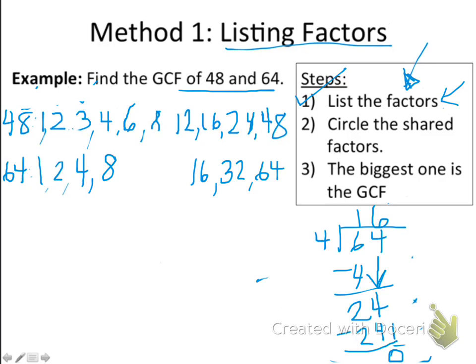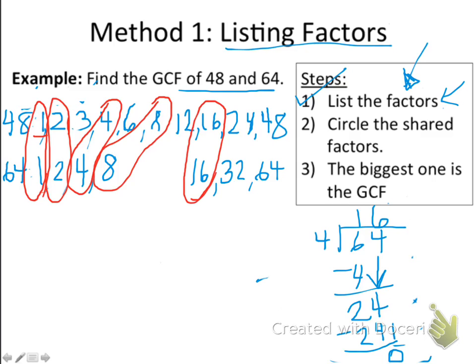The next step is to circle the shared factors. So circle the factors they have in common. Let's start at the beginning. Both forty-eight and sixty-four are divisible by one, so we can circle ones. They also both have twos, so we can circle the twos. Then they both have fours, so we can circle those fours. And they both have eights, so we can circle the eights. Keep going. They both have sixteen. And that's it. So we've done step two. We've circled the factors.